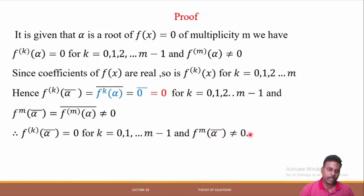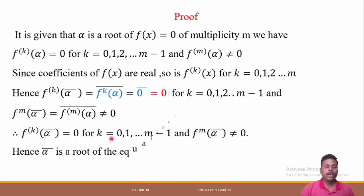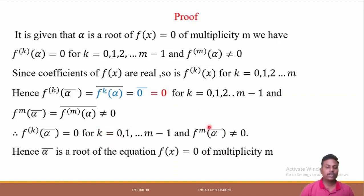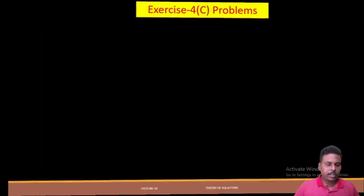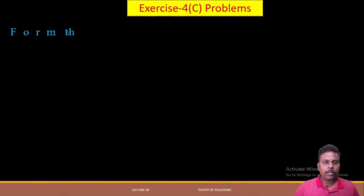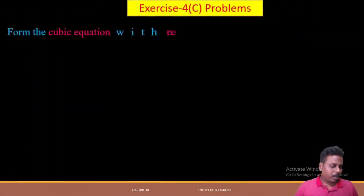Hence ᾱ is a root of f(x) = 0 with multiplicity m, completing the proof of the theorem.